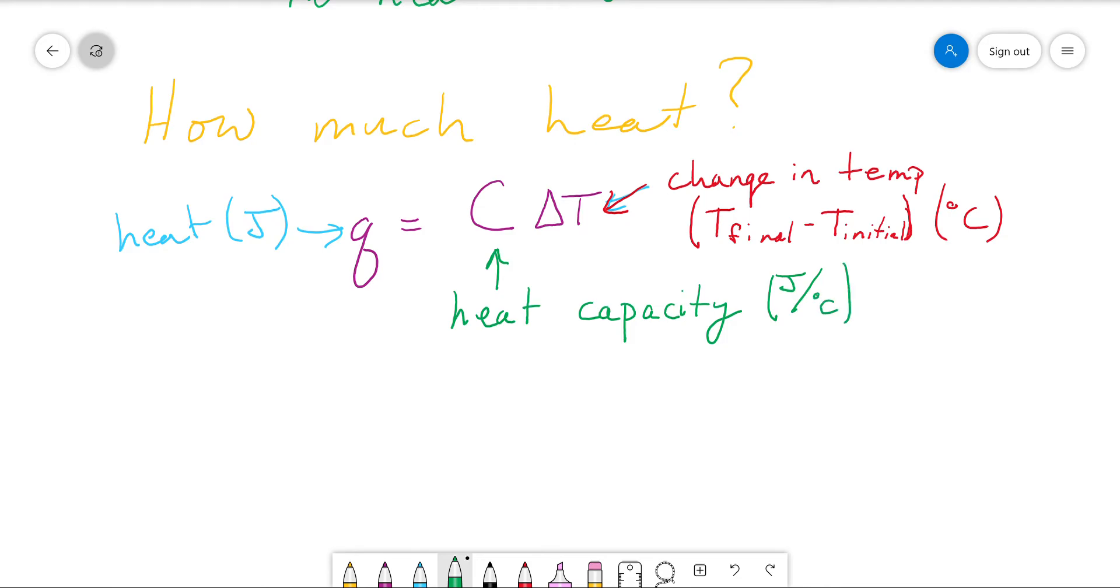Similar thing here with heat capacity. The units here are joules per degree Celsius. What this means is it is the amount of heat required to raise the temp of an object one degree Celsius.